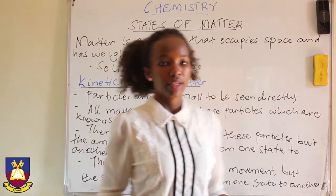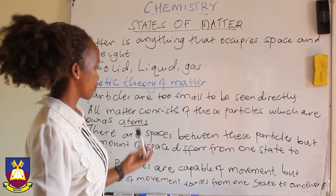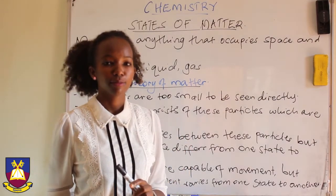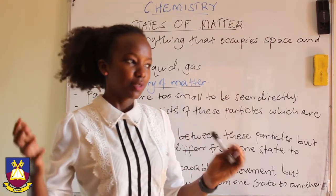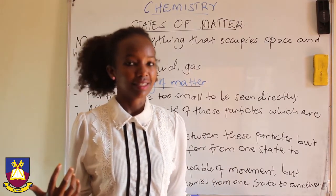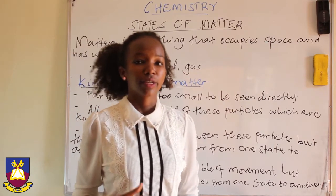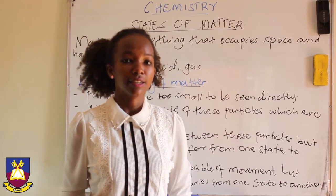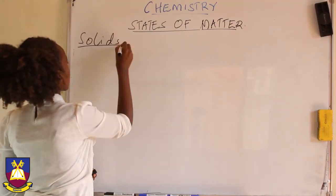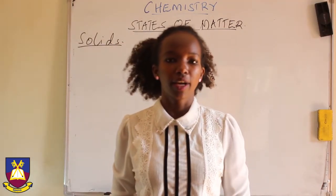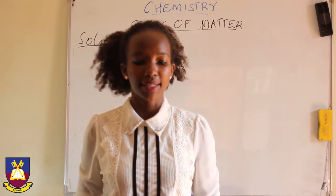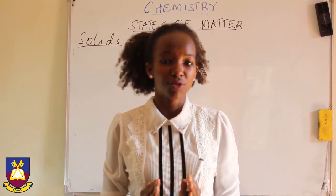So that is about the kinetic theory of matter. Now we are going to be applying this to every state of matter so that the next time you see a substance you can easily tell which state it is. We are going to start looking at the different states of matter starting with solids. In solids, we have those particles, but the particles are very close together.